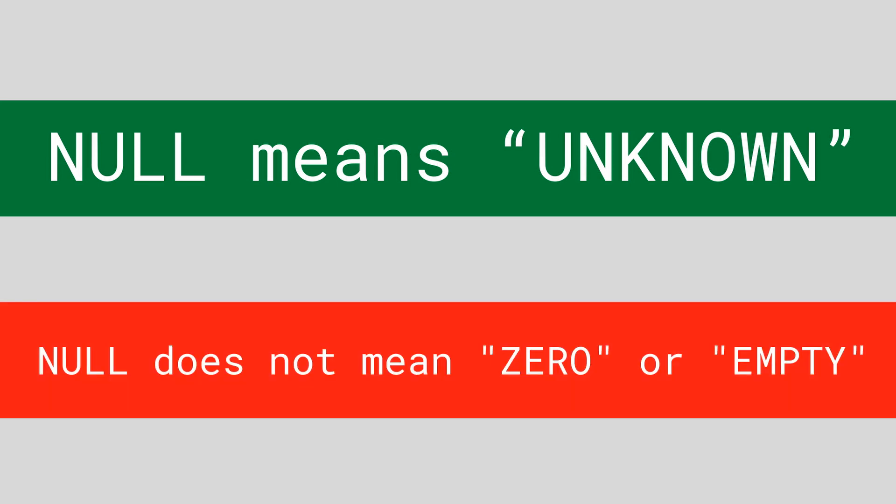In general terms, a Null in SQL means it is unknown or missing. This is extremely important to remember. A Null does not mean zero or empty — it means we don't know what the value is. That's a huge difference, as you will see later on in this video.